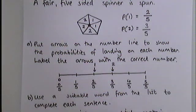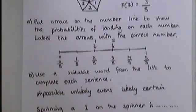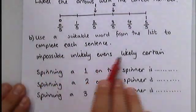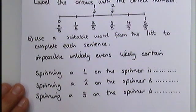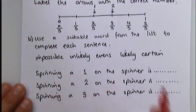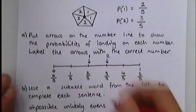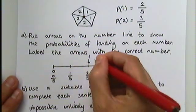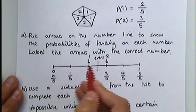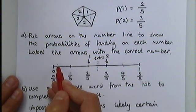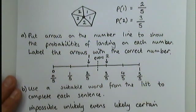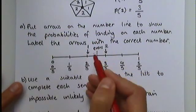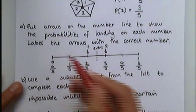There's a second part to this question, though. It says, use a suitable word from the list to complete each sentence. And here's a list of words: impossible, unlikely, evens, likely, and certain. Spinning a one on the spinner is... Now, remember, if something is dead in the middle like this, that is evens. To the left-hand side is unlikely. To the right-hand side is likely. So the probability of getting a one here, to the left-hand side, this is unlikely.